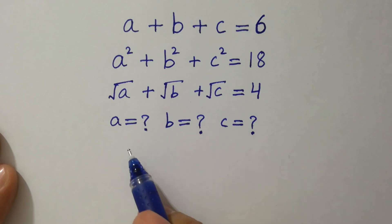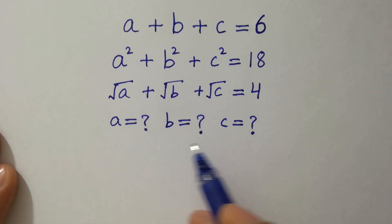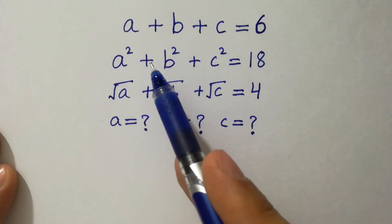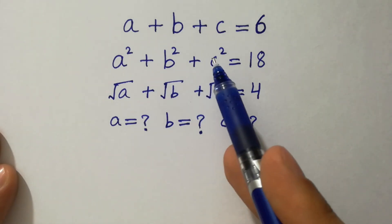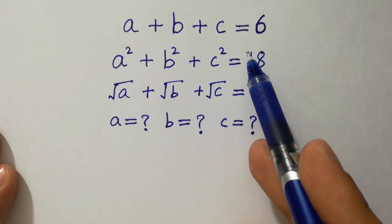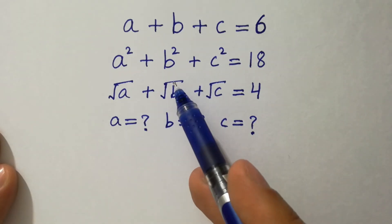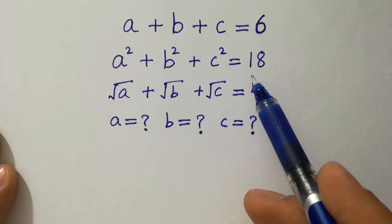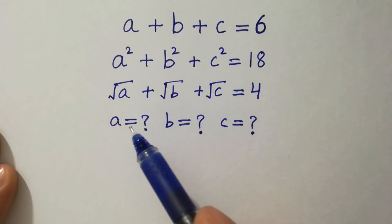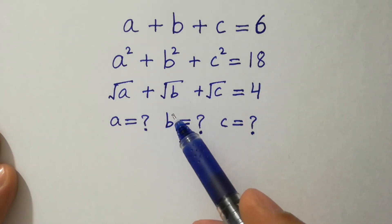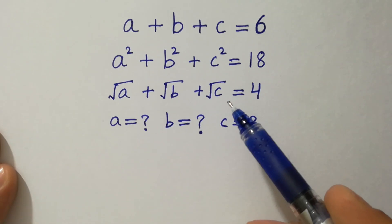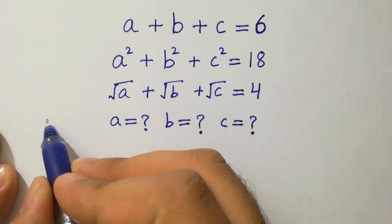Hello friends, find the values of a, b and c where a plus b plus c equals 6, a squared plus b squared plus c squared equals 18, and square root of a plus square root of b plus square root of c equals 4. Let's have a solution.